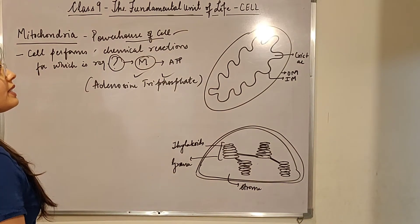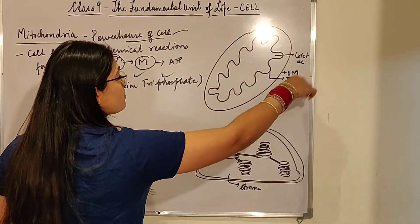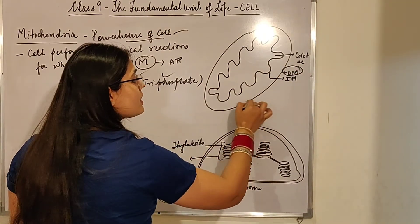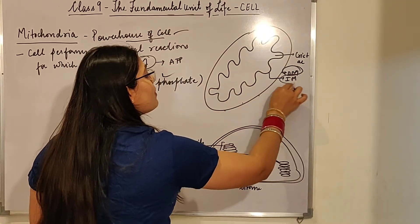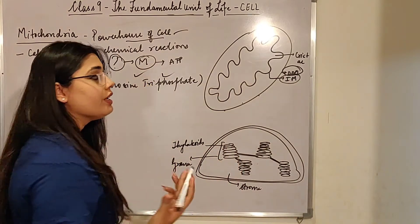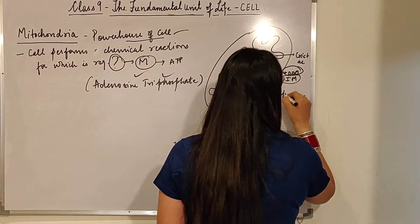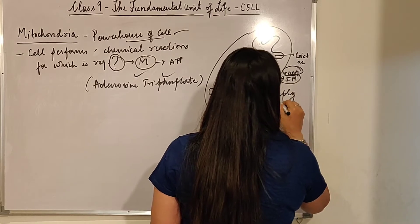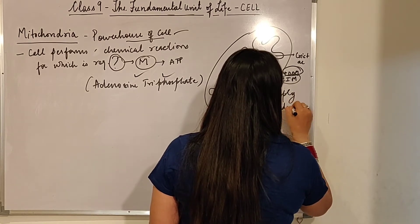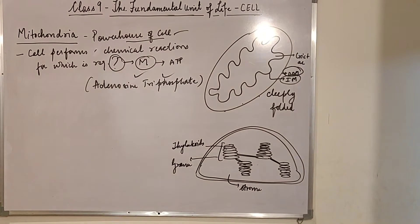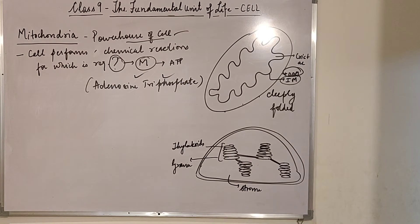Now let's come to the structure of mitochondria. It is a double membrane structure. The outer membrane is porous in nature — it has small pores. The inner membrane is deeply folded. So it is a double layered structure.